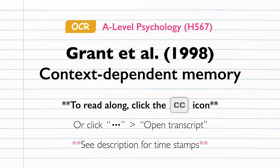Methodology. The study was conducted as a laboratory experiment with an independent measures design. There were two variables: participants who were in a silent reading condition, who were then tested in either a silent or noisy testing condition, or participants who were in a noisy reading condition, who were tested in either a silent or noisy testing condition. There were three dependent variables: reading time, which was used as a control; performance on a multiple choice test; and performance on a short answer test.